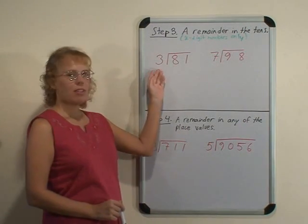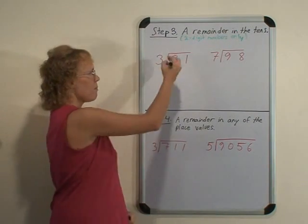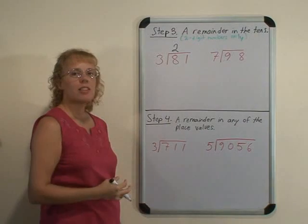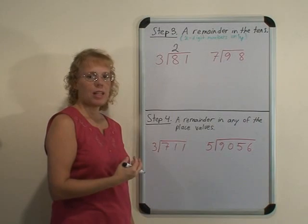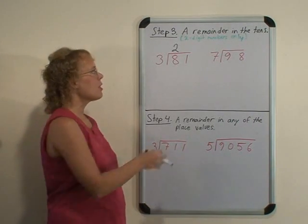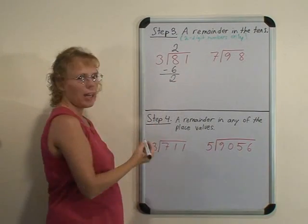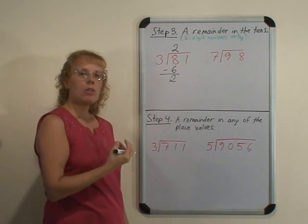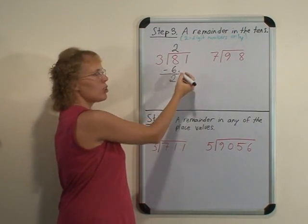Here we start out: 3 goes into 8, or 8 tens, 2 times, but that is not an exact division. There is a remainder. So to find the remainder, we now multiply and subtract to find how many tens are left over. 2 times 3 is 6, and subtract to find that 2 tens are left over. And now the 2 tens are combined with the 1 one by dropping down a digit.